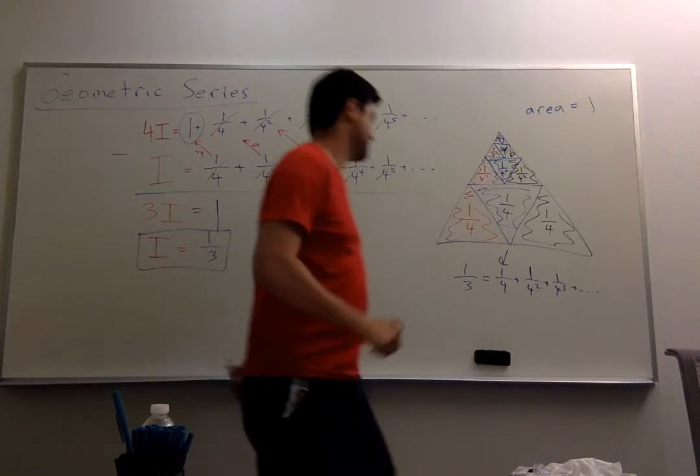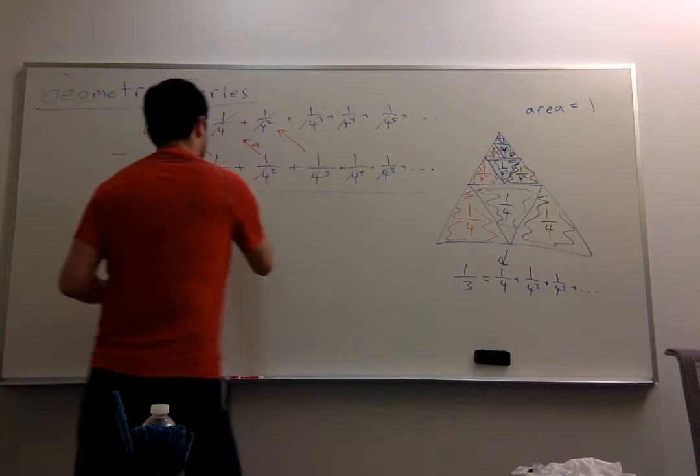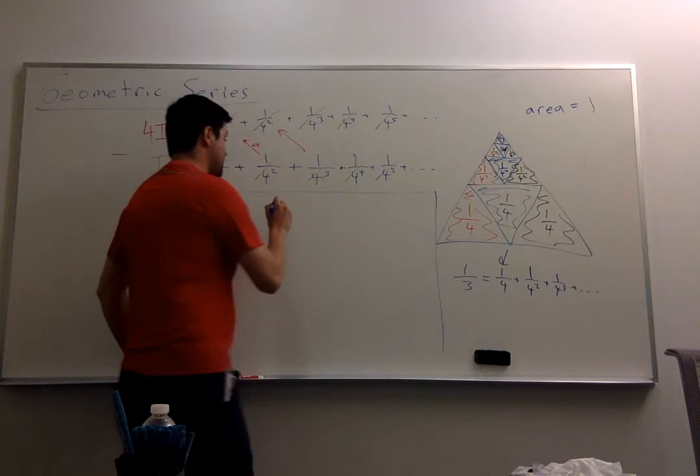And you may be wondering, well, 1 quarter, it's kind of arbitrary here, right? There's not really anything special about a quarter. It turns out, if I have any number between minus 1 and 1,